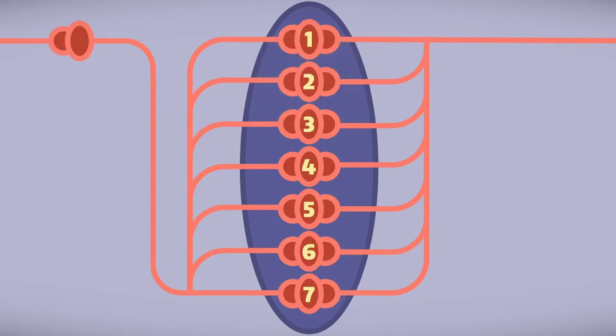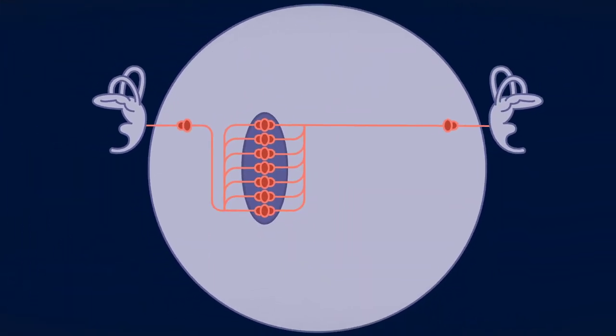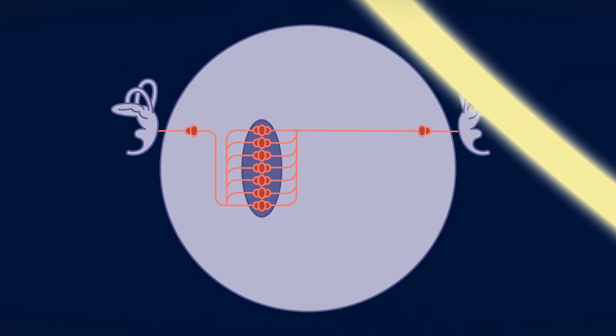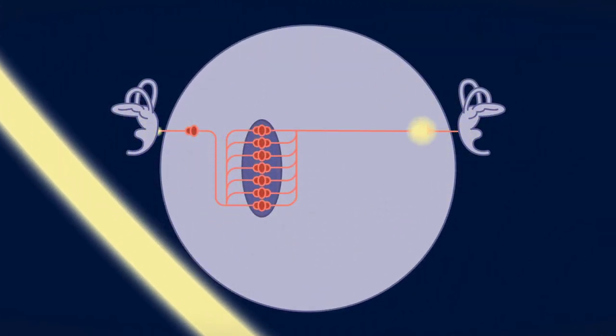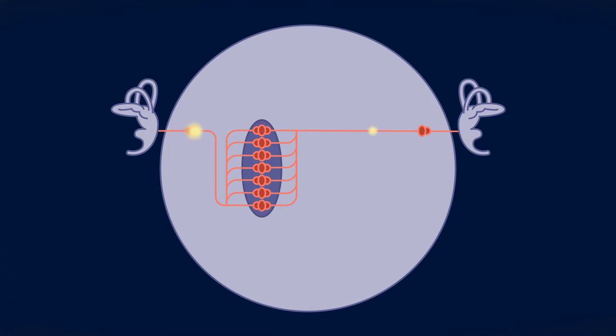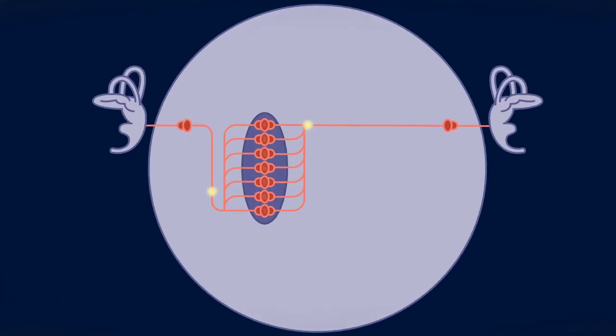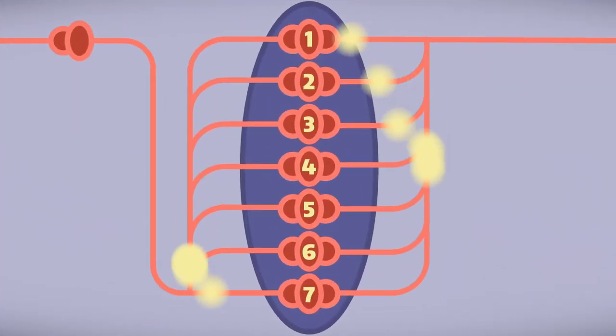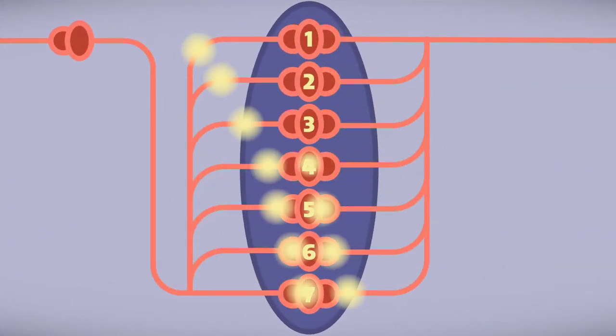And these so-called coincidence detector neurons are spatially arranged to systematically receive inputs from delay lines with different lengths.